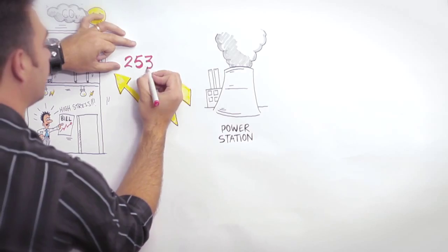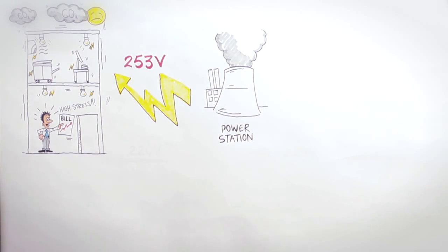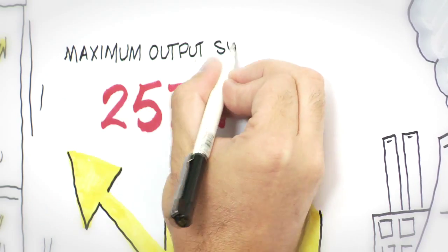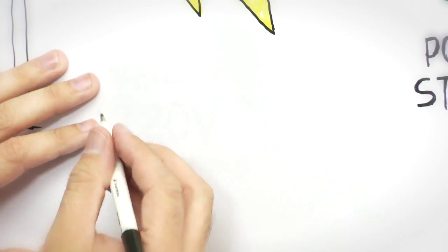Power stations, however, send out a maximum 253 volts to ensure those at the end of the grid are receiving the minimum voltage.